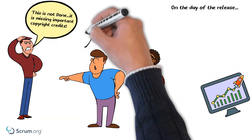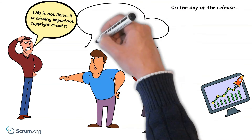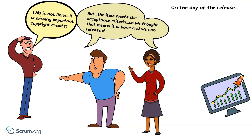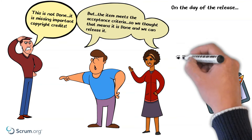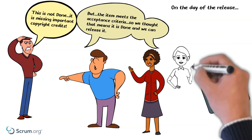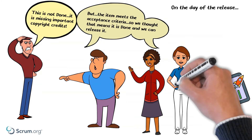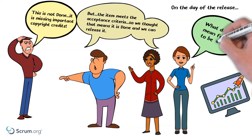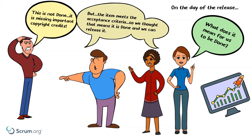Steve asks why Blake and Nisha moved the product backlog item to done, when it is obvious to him that it cannot be released in its current state. Blake and Nisha, on the other hand, thought it was releasable — after all, they met all the acceptance criteria, so they consider it done. The team has different views of what it means to be done. Robin, the scrum master, points out that the scrum team needs a definition of done.